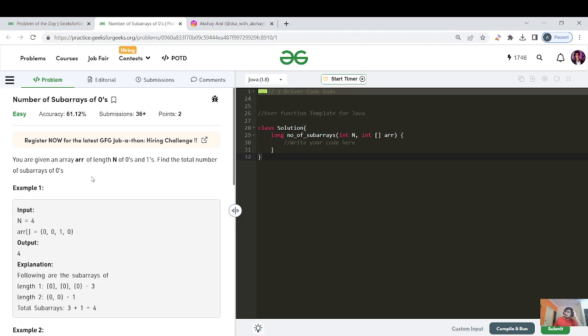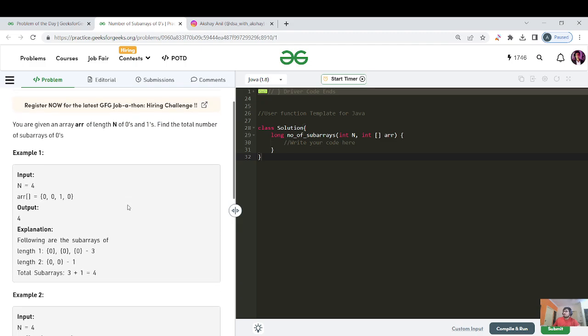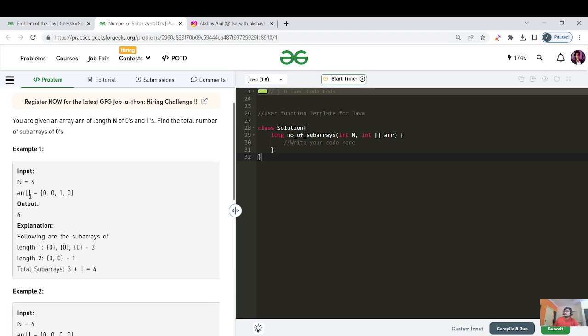This question is very simple. I know many of you guys are from south India and not able to understand Hindi, so I'll explain at a much better pace. But this question is very simple, I don't think you guys will need help to solve it. You are given an array of length n of zeros and ones, and I want to find the total number of subarrays of zero.